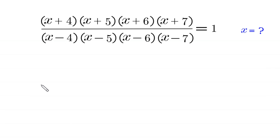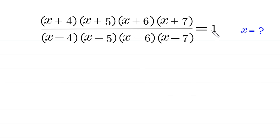Hello everyone, welcome. We will solve this algebra equation: (x+4)(x+5)(x+6)(x+7) divided by (x-4)(x-5)(x-6)(x-7) is equal to 1. Our job is to find all possible values of x.